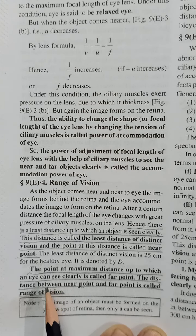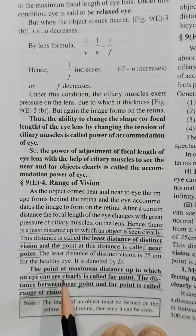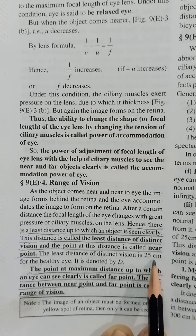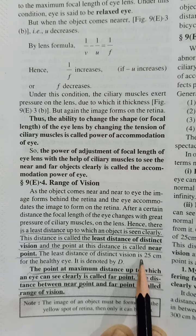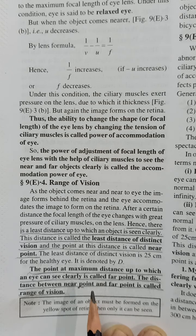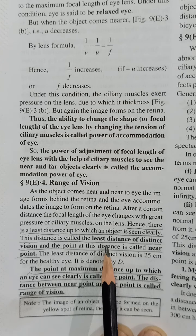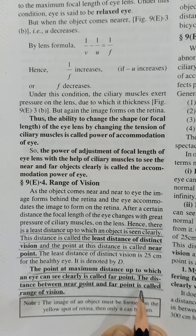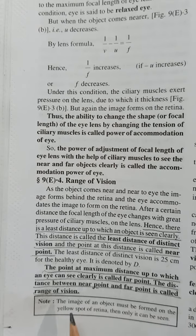The next definition is 'far point' — the point at maximum distance up to which an eye can see clearly. The near point is at 25 cm (least distance of distinct vision). The far point is the maximum distance where any optical instrument can see clearly. The distance between the near point and far point is called the range of vision.